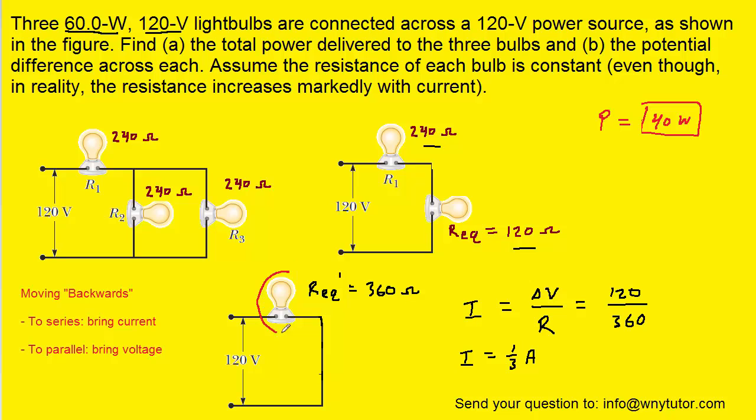So for example, when we move backwards from this resistor to these two, we'll notice that these two are in series with one another. And as a result we're going to bring with us the current. What we mean by that is that the current for both resistors will be a third of an amp. So we're going to end up giving a third of an amp to both of those.